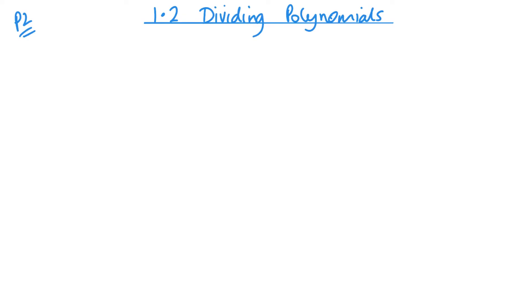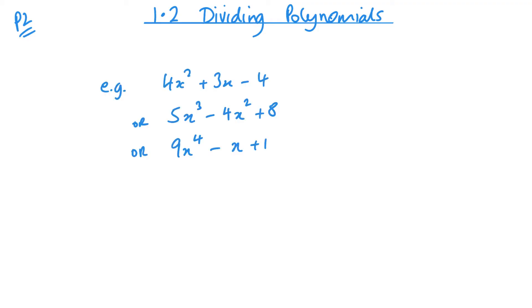Welcome back to P2. Today we're looking at dividing polynomials, unit 1.2. First, what's a polynomial? Well, it's an expression with positive whole number indices — things like a quadratic to the power of two, a cubic, a quartic, and so on. These are all polynomials, and here are three examples.